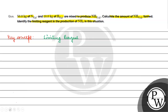Now agar ham log baat karein, we have N₂ + 3H₂ → 2NH₃. Stoichiometrically, agar dhyan se dekhen, toh hamein ek mole nitrogen ki zarurat parti hai, teen mole hydrogen ki zarurat parti hai, tab jaake hamare paas two moles ammonia banti hai. One mole of nitrogen and three moles of hydrogen are required for production of two moles of ammonia.